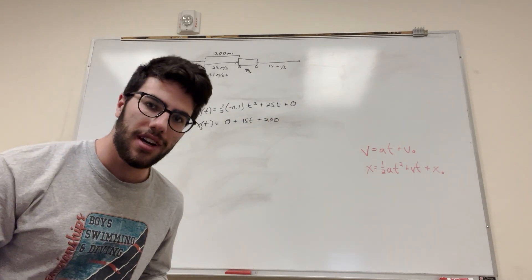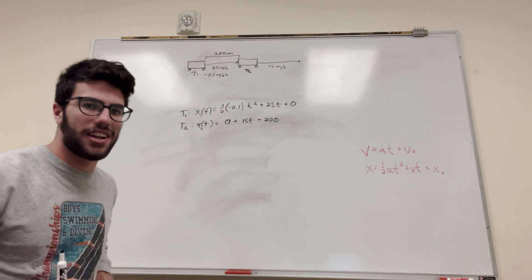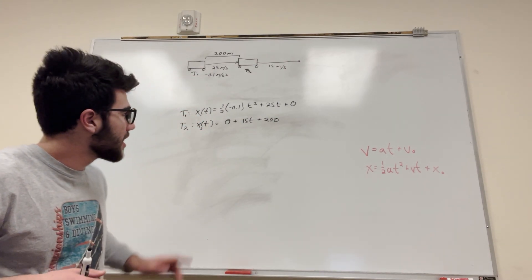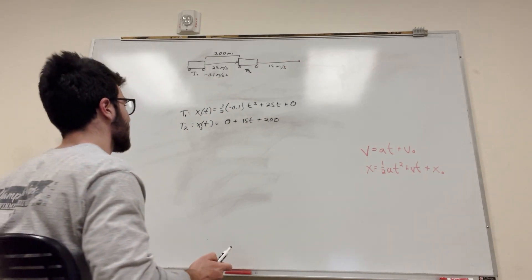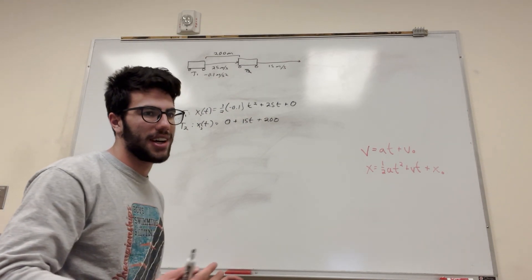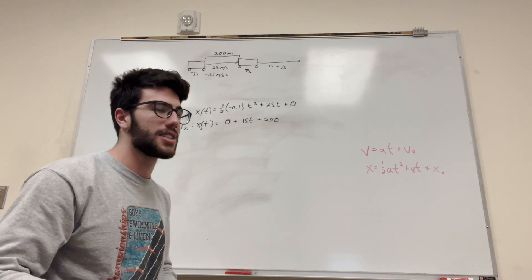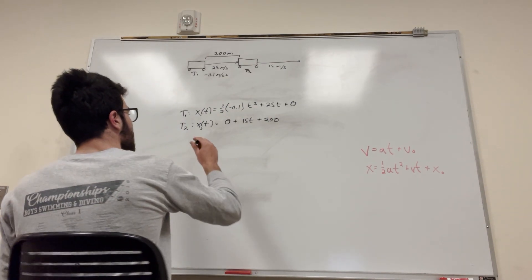Now, if we want to see where these two run into each other, simply set x equal to each other. If you set the two position things equal to each other, it's going to find where they run into each other. If they don't run into each other, you're going to find that there's no solutions, or it's an imaginary number. So, let's write this out.